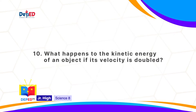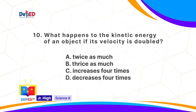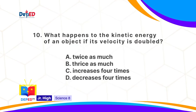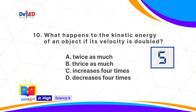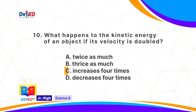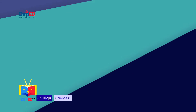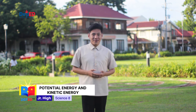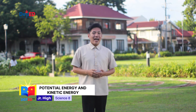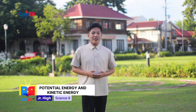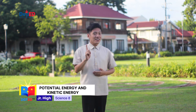What happens to the kinetic energy of an object if its velocity is doubled? A, twice as much. B, four times as much. C, increases four times. D, decreases four times. The correct answer is C: increases four times. Did you get all the items right? If not, no worries. At the end of this week's lesson, you'll understand everything. With that being said, let's start our discussion.